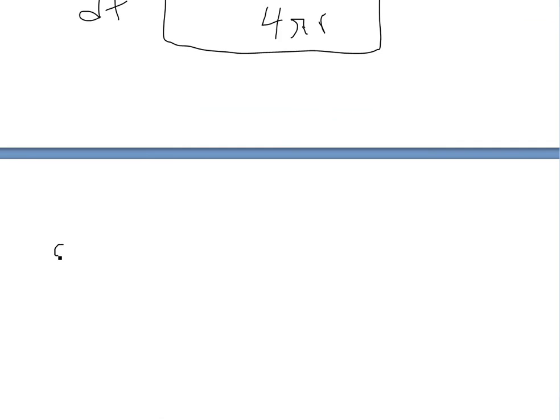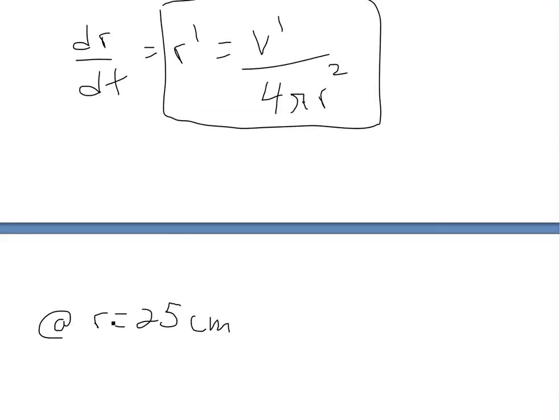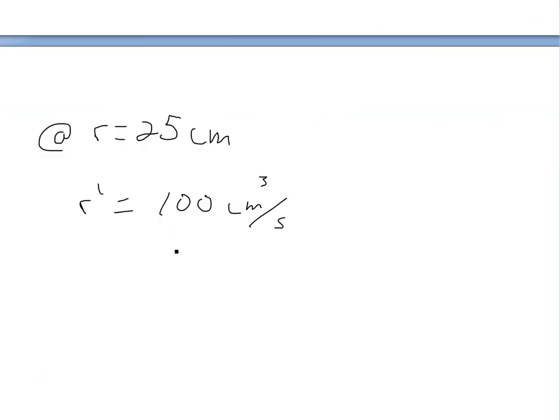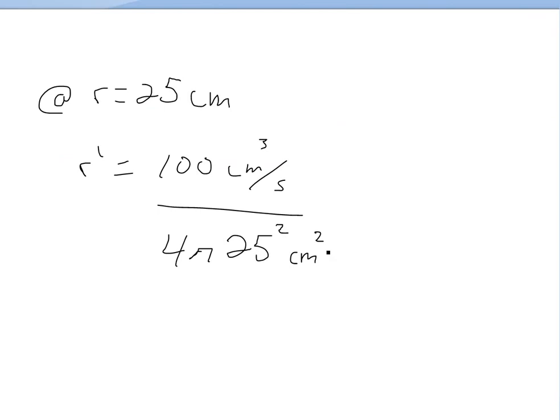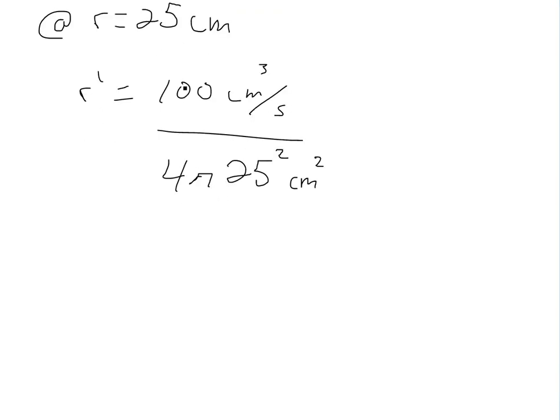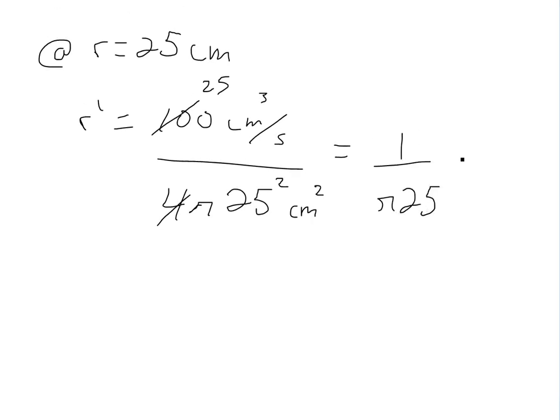So now, if we solve for it at r equals 25 centimeters, we get now r prime is equal to v prime, which is always 100 centimeters cubed per second, divided by 4 pi times 25 squared, and this is going to be centimeters squared. And obviously the centimeters will cancel, we'll be left with 1 centimeter divided by second as we should, because the radius is just a unit of centimeters per second here. So now, this part here, divided by 100, we can cancel this to be 25, so we'll be left with 1 over pi times 25 centimeters, so centimeters per second. So this is the answer.